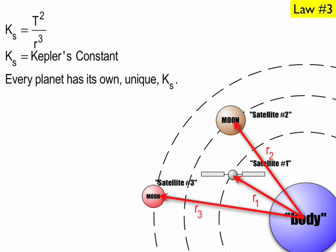So, if I look for the period for number 1 squared divided by the distance between the body and satellite number 1 cubed, they equal the same thing as the period squared for the brown moon divided by the distance between the body and the brown moon cubed. The same thing can be said for the red one, T squared over R cubed. So, all these objects, because they orbit the same body, are related.